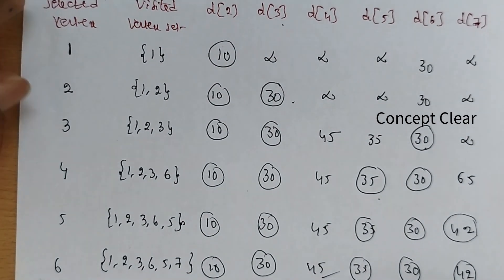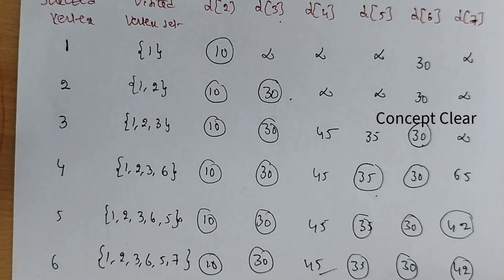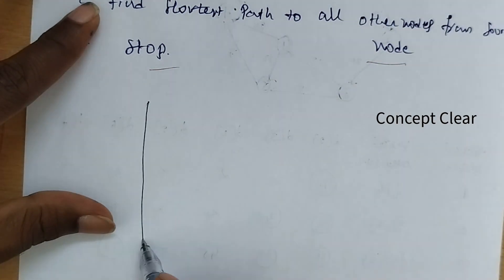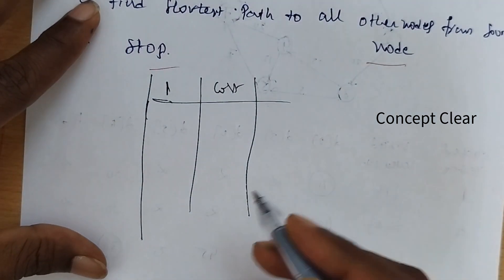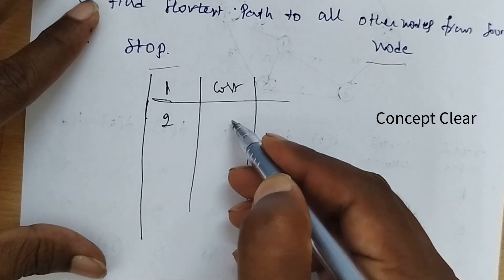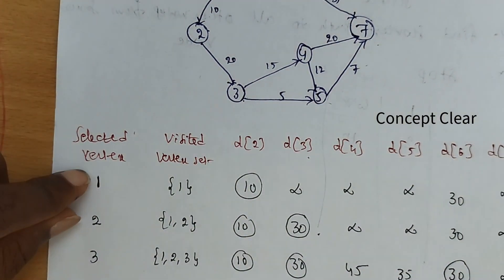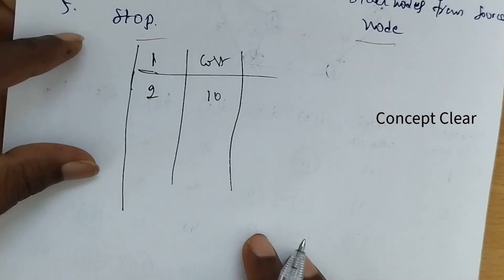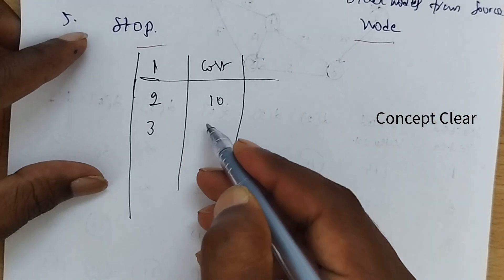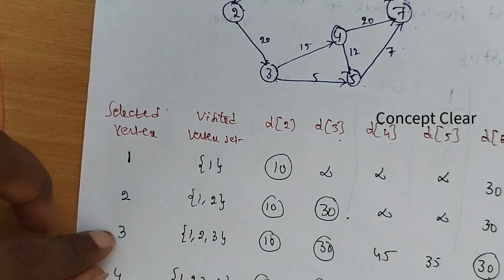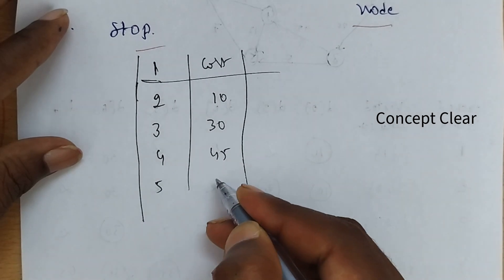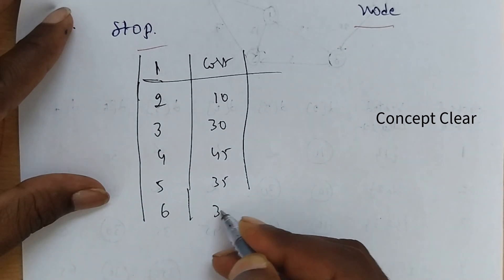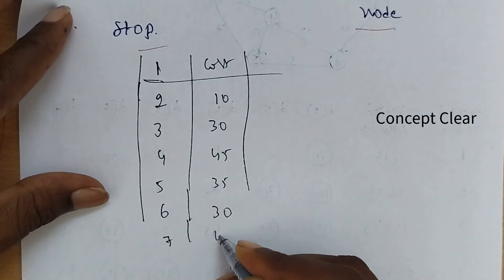We have to find out the cost from every vertex starting from node 1. According to the table, the cost from node 1 to node 2 is 10. Node 1 to node 3 is 30. Node 1 to node 4 is 45. Node 1 to node 5 is 35. Node 1 to node 6 is 30. Node 1 to node 7 is 42.